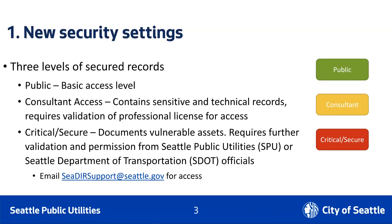To apply for Consultant access, you will be asked to provide a professional license number, such as a licensed surveyor's number, professional engineer number, geotechnical engineer, or architect's number. Or, if you're outside of one of these categories, a Universal Business Indicator for active businesses. Critical Secure records document our most vulnerable assets.